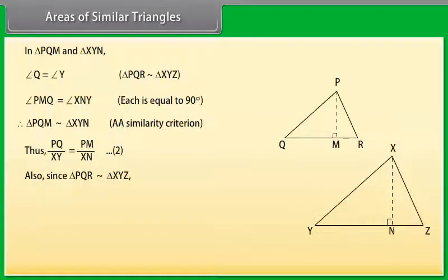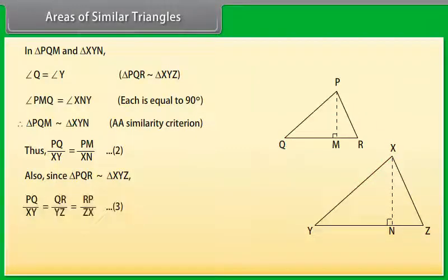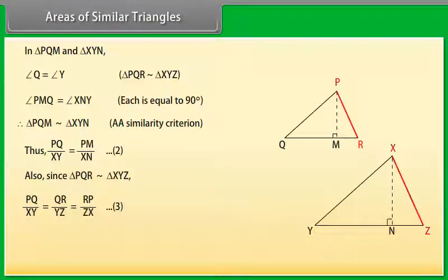Also, since triangle PQR is similar to triangle XYZ, PQ upon XY equals QR upon YZ, which is equal to RP upon ZX. Mark it as equation 3.